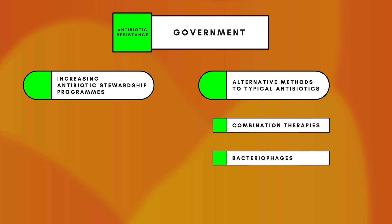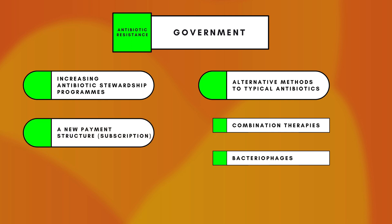Bacteriophages are controversial because we don't know the impact on humans — it's a very good way of dealing with bacteria but we're not sure how to make sure they're safe for human use, so that's one to watch. The government can also introduce a new payment style for big pharmaceutical companies. Currently they're paid more for medications that are used more, which isn't effective for new antibiotics. Instead, the government is planning to switch to a subscription-style payment, paying pharmaceutical companies higher amounts for more useful medications — antibiotics targeting superbugs — to increase the incentives for big pharma to create these medications.